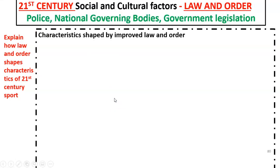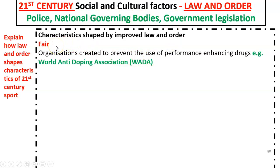Let's move on to law and order. Law and order is very much prevalent in 21st century Britain because we now have the police force, national governing bodies, and government legislation to ensure both society and sport have a high level of law and order. These organisational bodies can stop malpractice in sport. The first characteristic shaped by improved law and order is that sport is fair, or at least attempts to be fair.